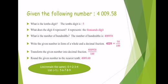What is the tenths digit? The tenths digit is the first digit after the point, so it is five. What does the digit four represent? It represents the thousands digit. What is the number of hundreds? The hundreds digit is eight, so we write eight and all digits before it — without the point.